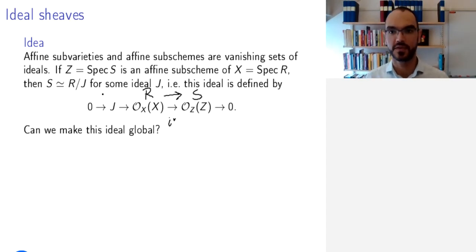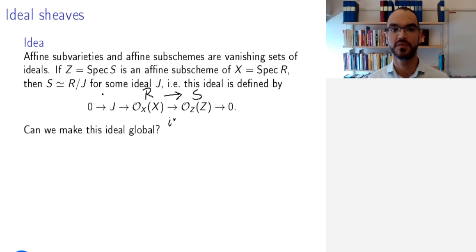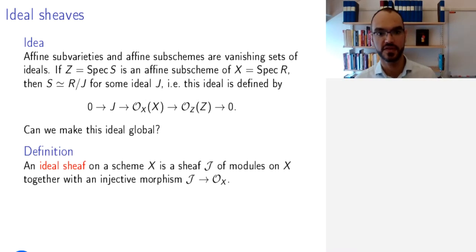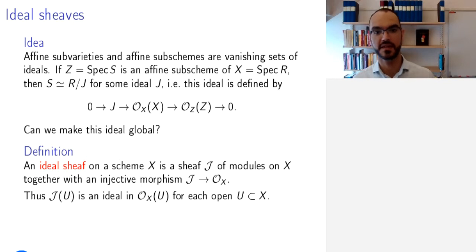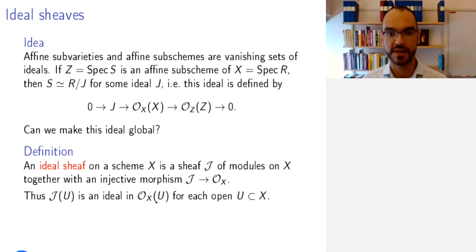This idea works well for affine schemes and we want to globalize it — that is, we want to define sheaves of ideals. An ideal sheaf on a scheme X is a sheaf of modules on X together with an injective morphism into the structure sheaf of X. This means that for each open U in X, J(U) is an O_X(U)-submodule of O_X(U), which is exactly the same as saying it is an ideal in O_X(U).